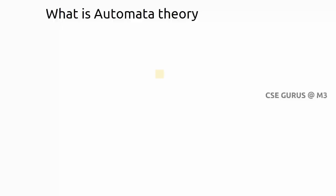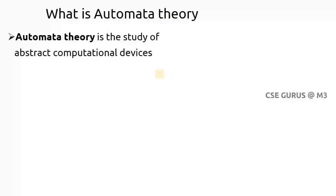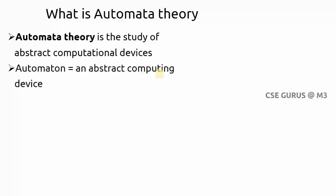Automata theory is a study of abstract computational devices. A device, in general, takes input, performs some particular task, and gives respective output. Here we are talking about abstract devices — they are invisible, but they perform the same task. These devices, which we call abstract computational devices or machines, follow some rules. Automata, in this sense, means abstract computing device.